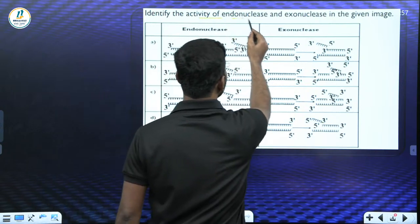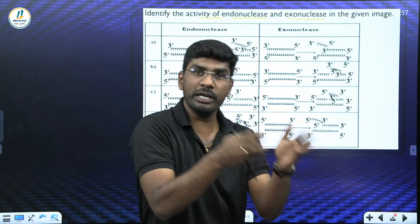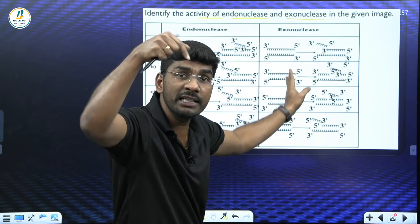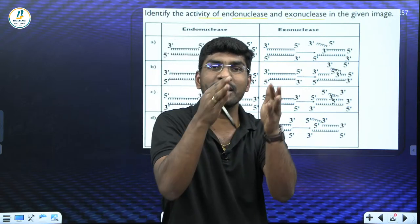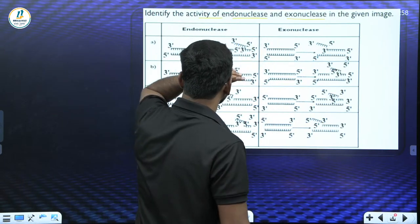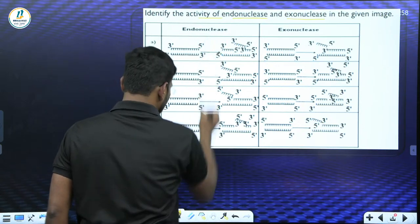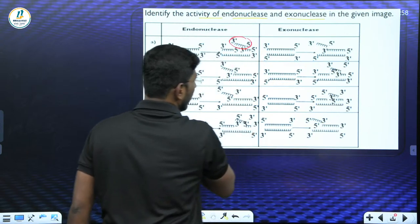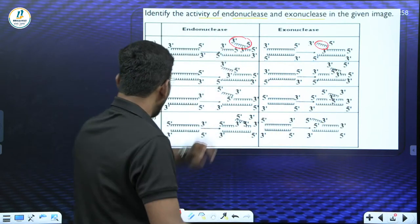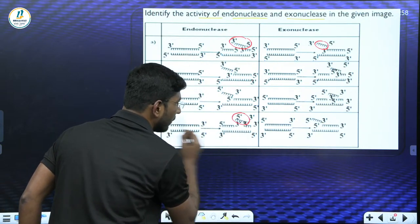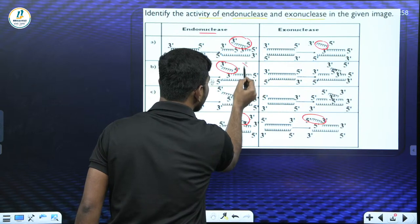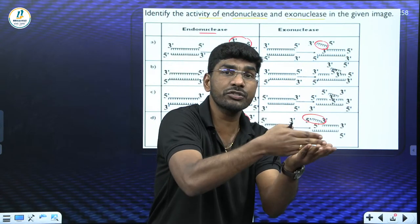Question two: Identify the activity of endonuclease and exonuclease. Endonuclease enzymes cut or cleave DNA in the middle, while exonuclease enzymes cut at the extremes. Four diagrams are given showing endonuclease and exonuclease function. In options B and C, the extremes are being cut and labeled as endonuclease — this is incorrect, because endonuclease cuts in the middle, not at the extremes.